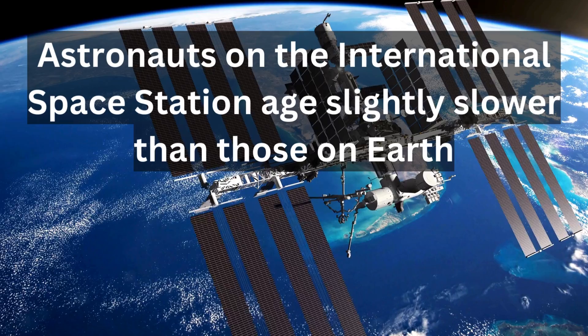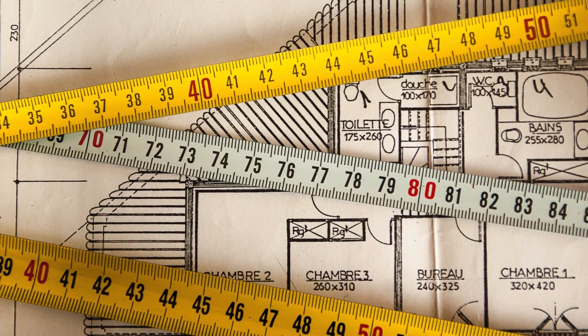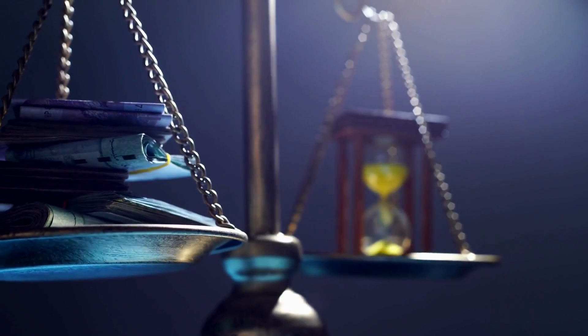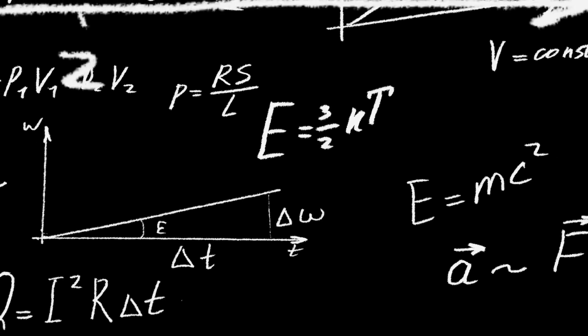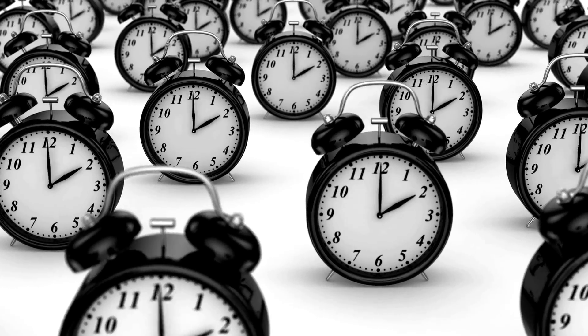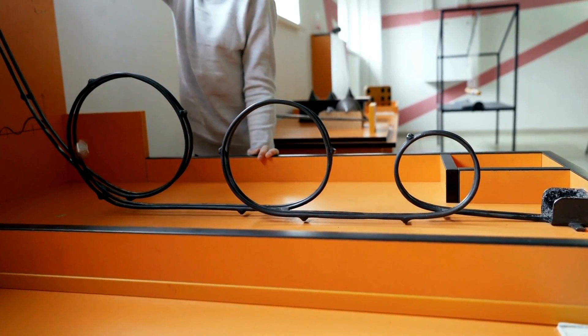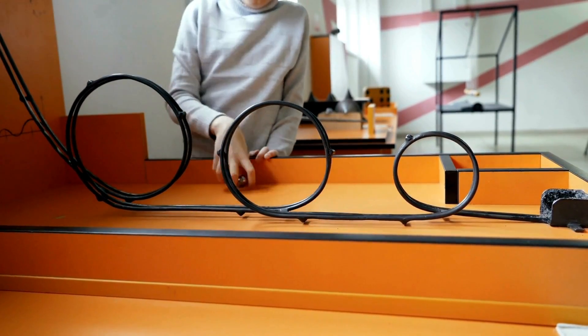Let's explore how time functions as a dimension. Just as we have three dimensions of space, length, width, and height, time is considered the fourth dimension. In physics, we describe events not just in terms of spatial coordinates, but also in terms of when they occur. For example, if an event happens at a certain place, it also happens at a specific time.